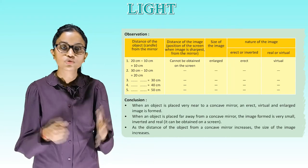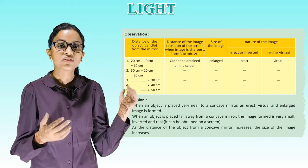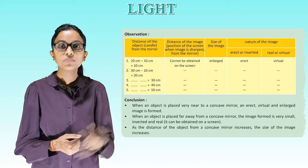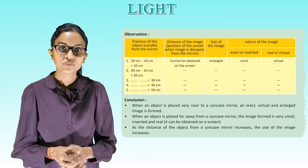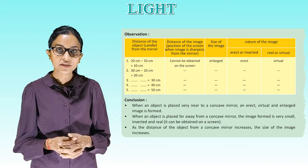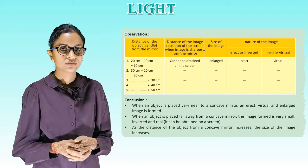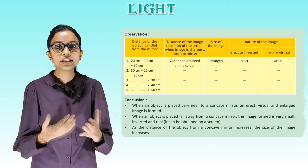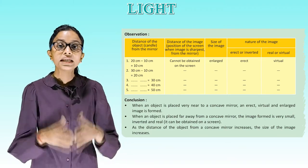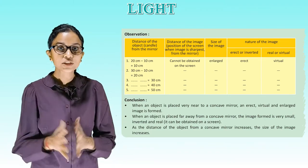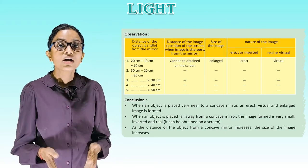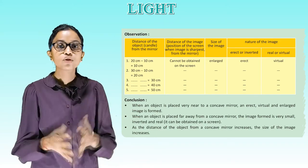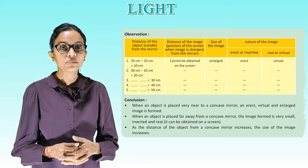Observation: record the distance of the object (candle) from the mirror, the distance of the image (position of screen when image is sharpest) from the mirror, the size of the image, and the nature of the image — erect or inverted, real or virtual. Conclusion: when an object is placed very near to a concave mirror, an erect, virtual and enlarged image is formed. When placed far away, the image formed is very small, inverted and real — it can be obtained on a screen.